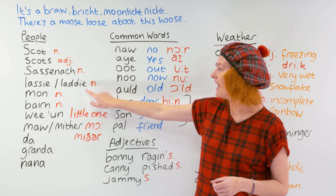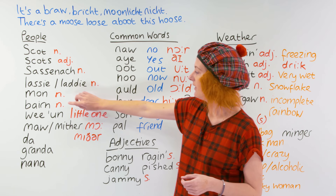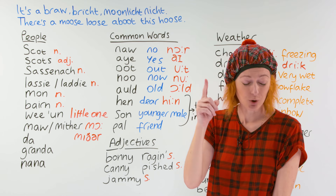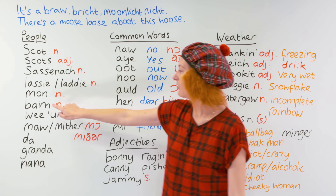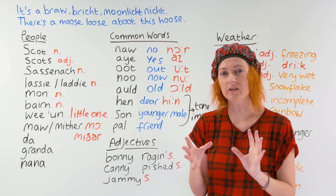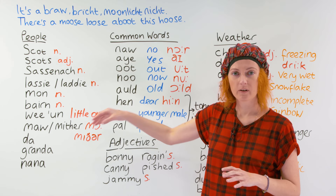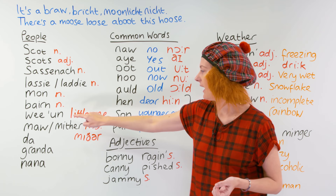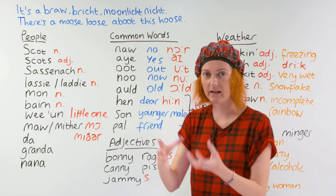A mon is a man. A bairn is a child. Something to point out here: in Scottish, they roll their Rs, and I cannot do that because I'm from the south. I wish I could do it. A Scottish R — if you can do it, do it. I can't. When a Scottish person says the letter R, you really hear it and it stands out in the word. In Scotland, for a little child or a little one, they would say wean. We means little, and the 'un' means one. Wean.